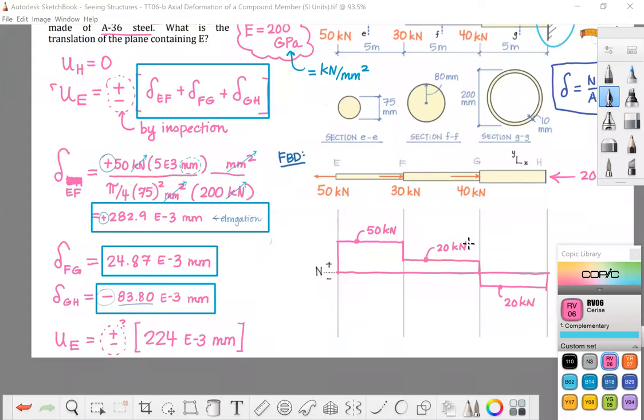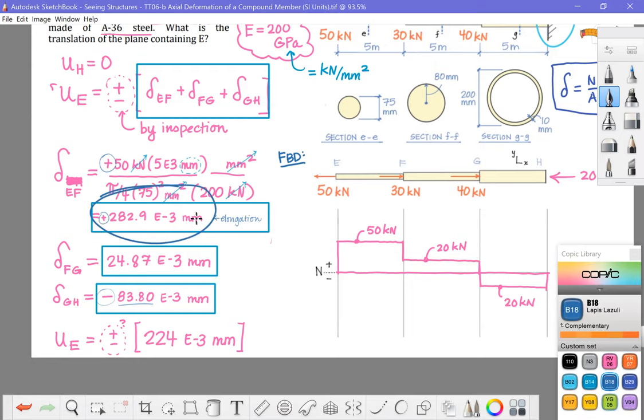so I just want to sum these three values together. That summation is 224 E-3 millimeters. And it is positive, right? The positive term is one. I had a very large positive term, had more positive here, and then just a small amount of negative. So I did get a net positive term. That means net elongation between plane E and plane H.